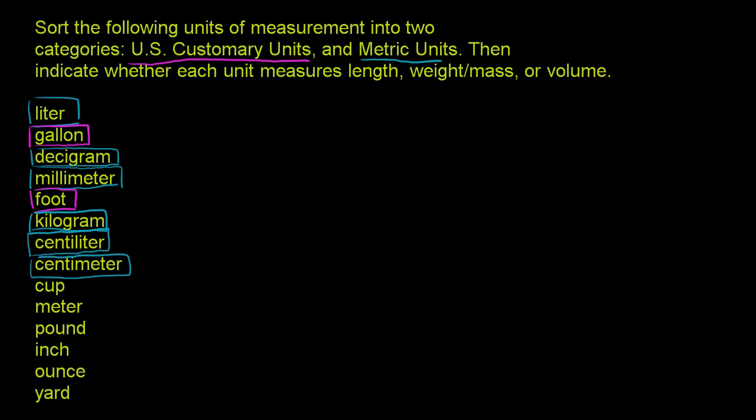Cup, that is U.S. customary units. We have to do that in the magenta. Cup, U.S. customary units. Meter, that is the metric system. Meter is the metric system. Pound, U.S. customary units. It's getting a little tedious.